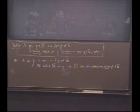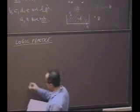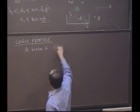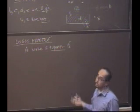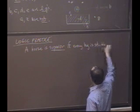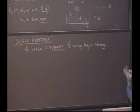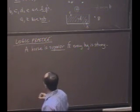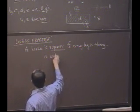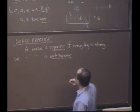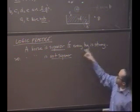Okay, so just a little logic practice. We're going to see what it means to negate a statement. So let's define a horse. We'll say a horse is superior if every leg is strong. Okay, now I just made up this definition. It's not something that horse people normally use. Horse is superior if every leg is strong. So a horse is not superior. Not to be confused with supremum. Not superior. How would I negate this?